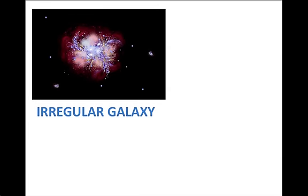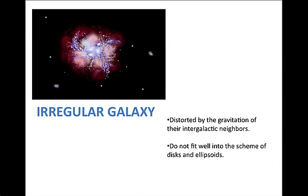Last but not least, an irregular galaxy is distorted by the gravitation of its intergalactic neighboring galaxies. It does not fit well into the scheme of disks and ellipsoids. They have irregular shapes.